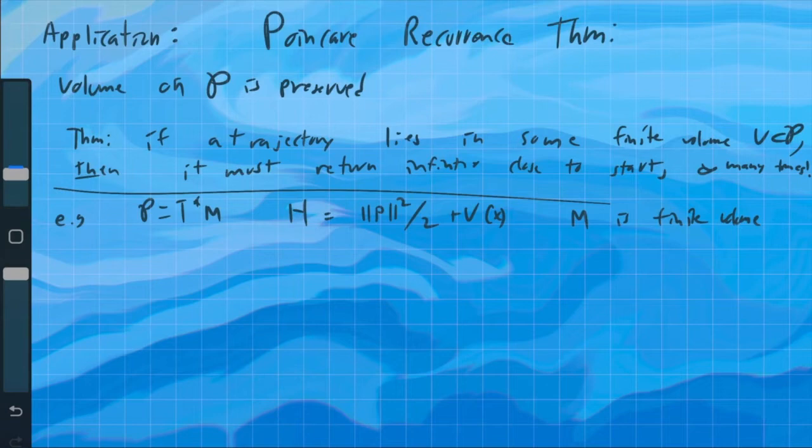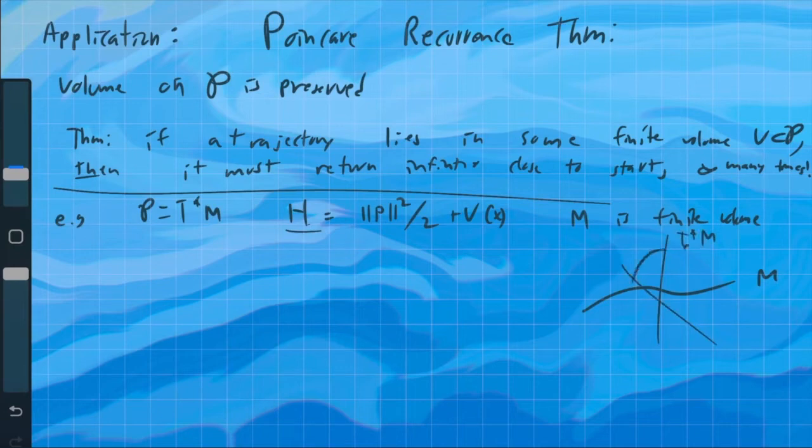So then a level set of H... Let's sketch this out a bit. So we have M here, and then we have the cotangent space at a given point. And then the energy set of H is just going to be a circle, or a sphere, defined by this kinetic energy term. So as long as we have p less than p0, then that means the Hamiltonian is going to be less than h0.